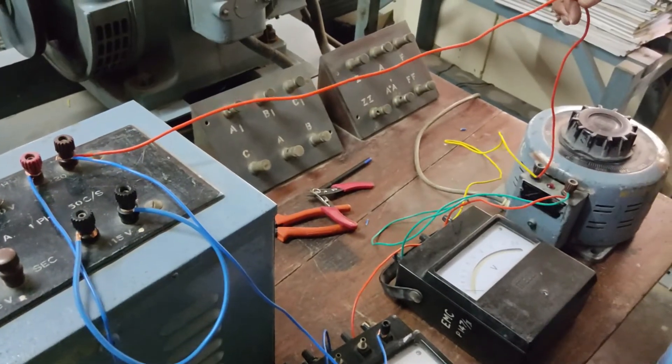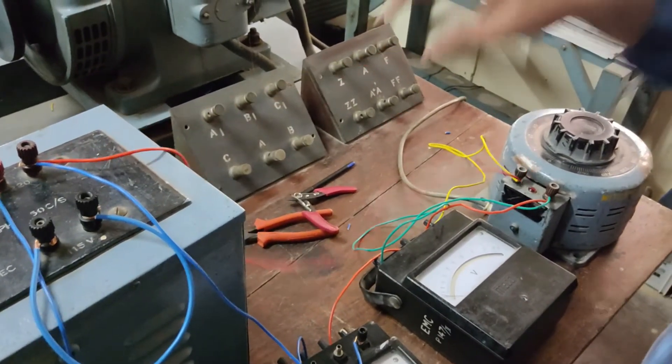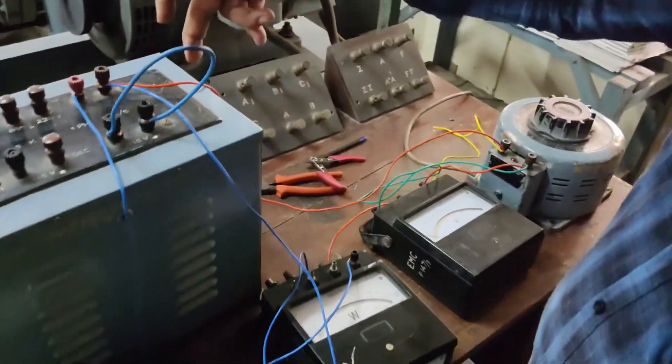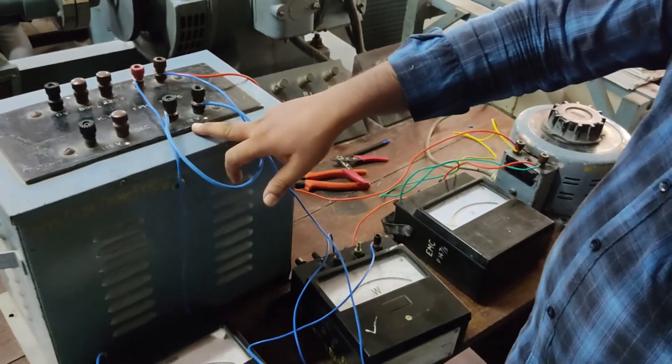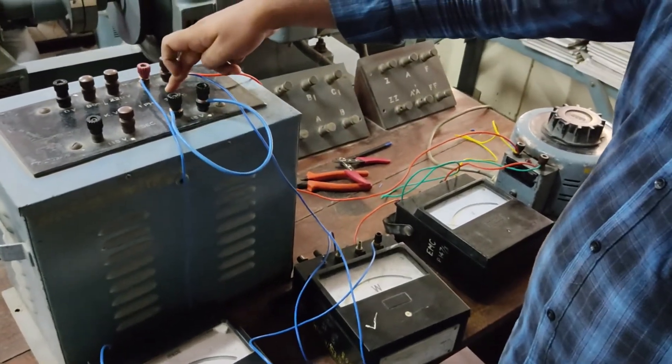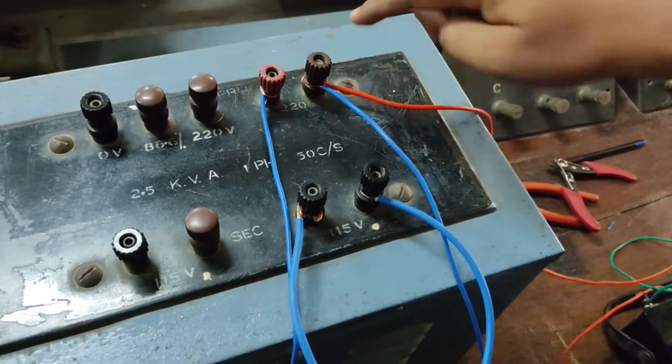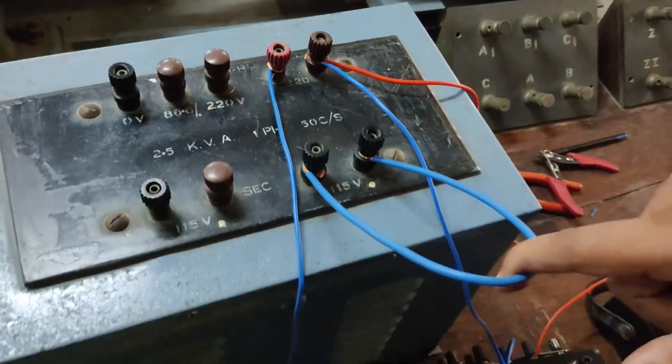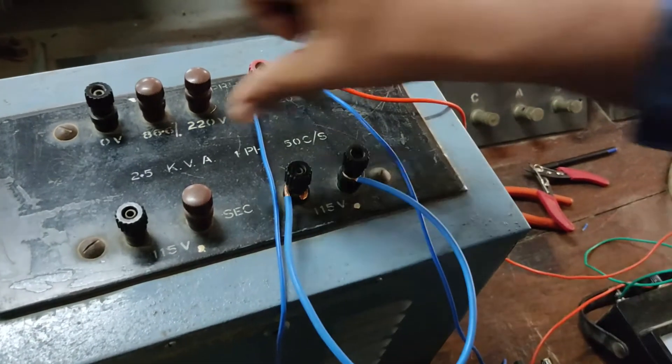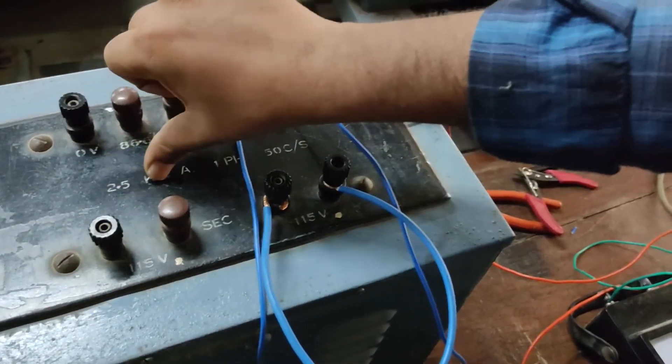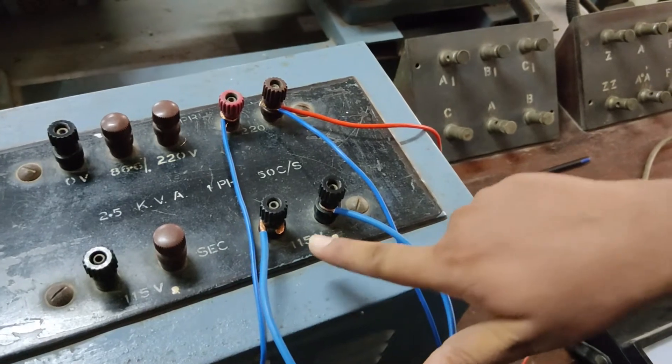For short circuit condition, the low voltage is shorted at 115 volts. Supply is given to the 220 volt high voltage side, and the low voltage side is shorted with a thick wire. These are 2.5 kVA. 2.5 kVA divided by 115 gives the rated current. At short circuit condition it is more than 20 amperes, that's why we have taken thick wire.